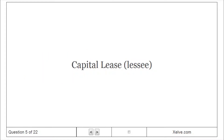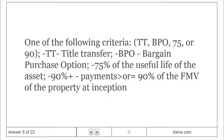Capital lease: one of the following criteria — T.T.B.P.O. — must be met: title transfer, bargain purchase option (BPO), lease term is 75% or more of the useful life of the asset, or the present value of minimum lease payments is greater than or equal to 90% of the fair market value of the property at inception.